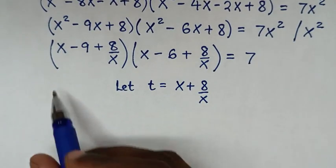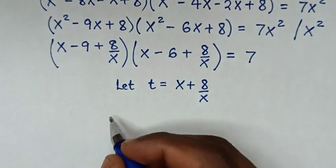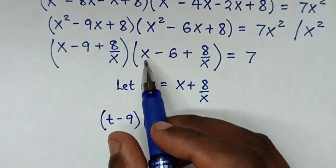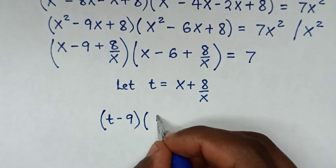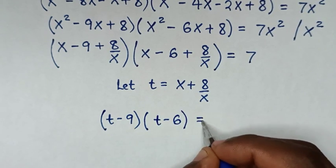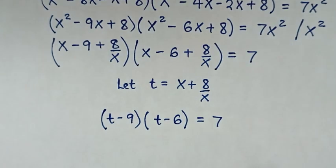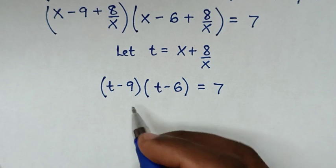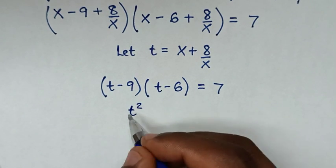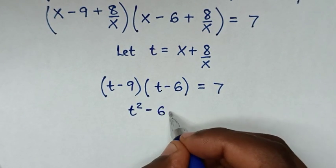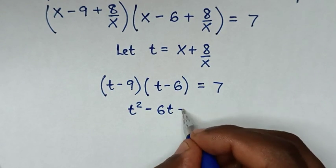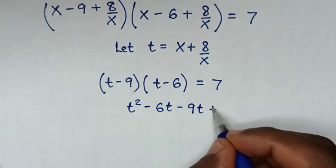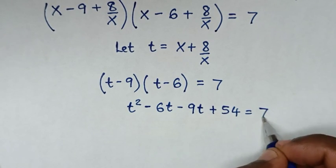Then our equation will be: the first bracket becomes t minus 9, and the second bracket becomes t minus 6, so (t minus 9)(t minus 6) equals 7. We multiply: t times t is t squared, t times negative 6 is negative 6t, negative 9 times t is negative 9t, and negative 9 times negative 6 is positive 54. So t squared minus 15t plus 54 equals 7.